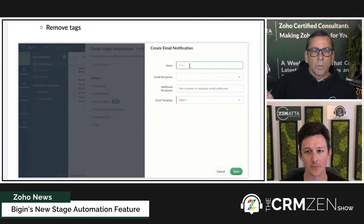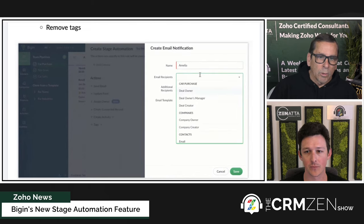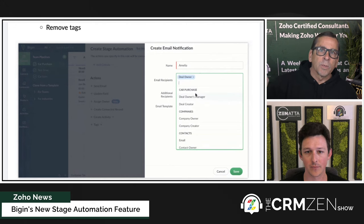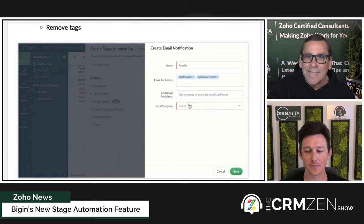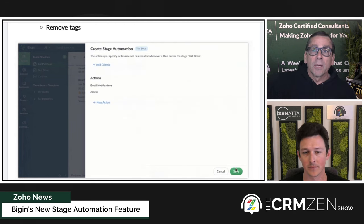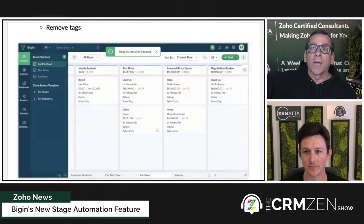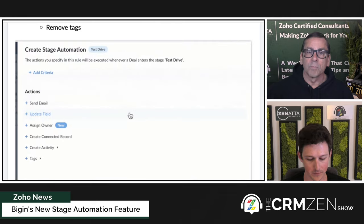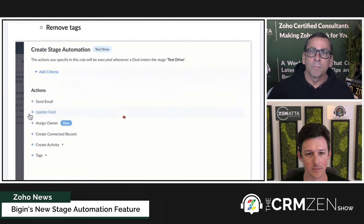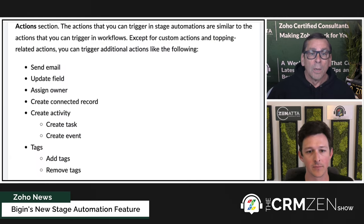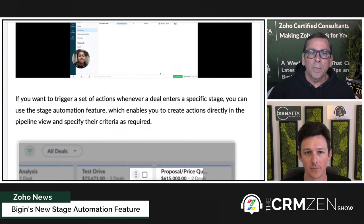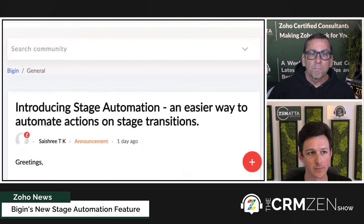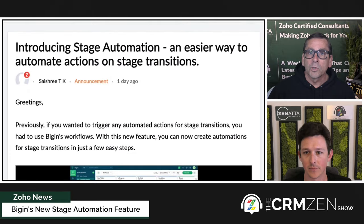I always like this. In Zoho Connect, we always talked about the Kanban views and tasking — you could click three dots and say if I move it here, extend the due date by five days or whatever. It's nice to not have to go into backend settings just to do that. So it's a small update, but if you're a Bigin user, check it out and see what you like.